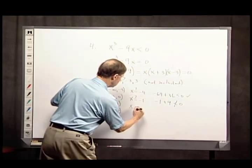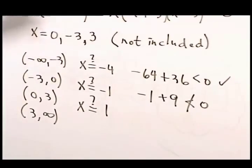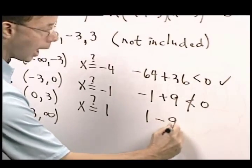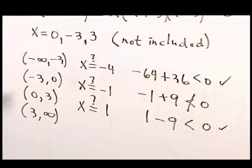Number 1. Does that work? Again, substitute it in. 1 cubed is 1 minus 9 times 1. That difference is less than 0. So that interval will be included in my answer.